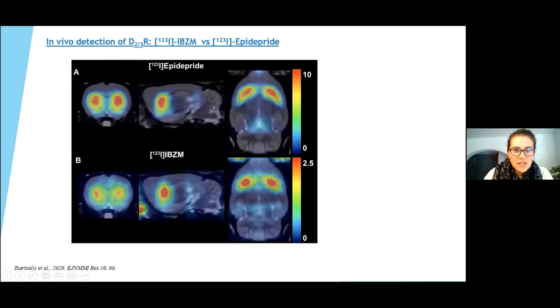As shown in this figure, you may notice the superiority of quality of the images acquired with the epidepride compared to an image obtained with the low affinity IBZM. Epidepride has high enough affinity to observe the dopaminergic receptor in the substantia nigra.